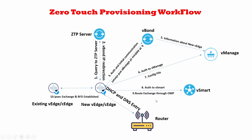The final step is to form an IPsec tunnel between the existing vEdge and the new vEdge. A BFD (Bidirectional Forwarding Detection) session is also established over the tunnel to detect any link flaps. All underlay traffic flows directly between vEdges via this IPsec tunnel, while overlay traffic — control plane communication — happens between the vEdge and vBond, vManage, and vSmart.